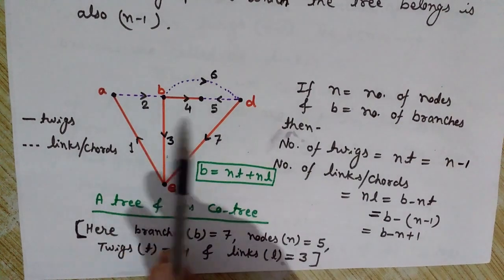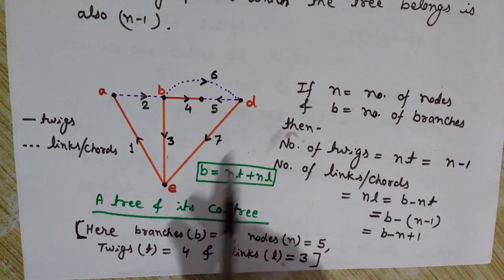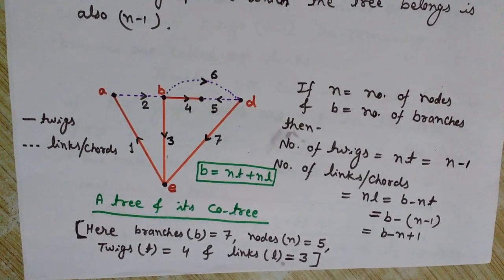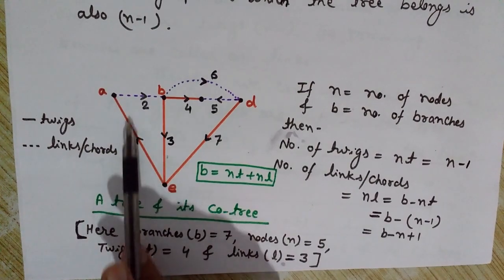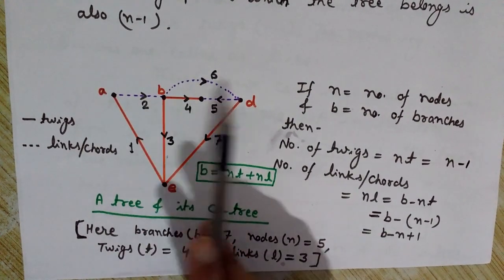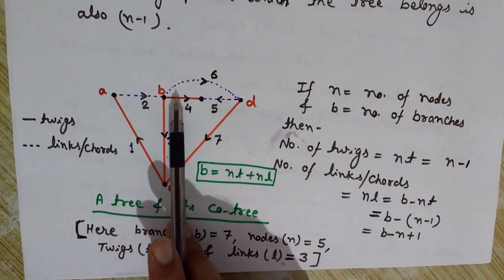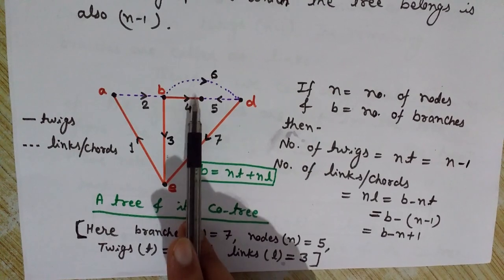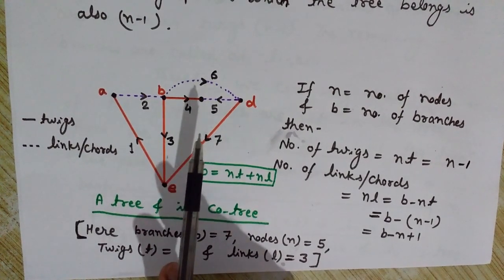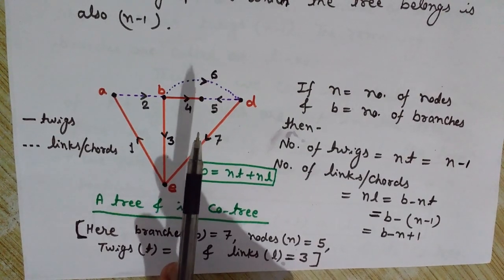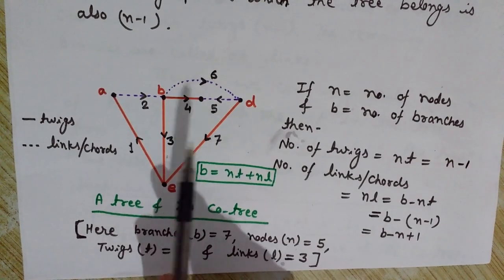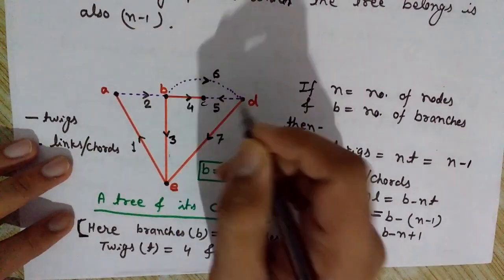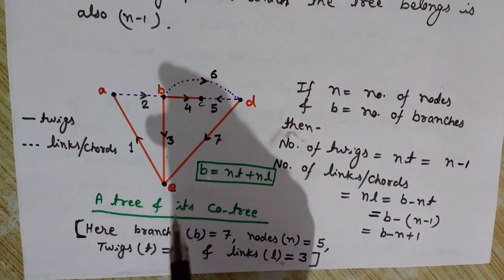This is one particular tree drawn from our example graph. The tree is a connected graph because it has a path from one node to another, and it has no closed path, unlike the original graph which had various closed loops. It also has a unique single path between every pair of nodes. This tree has five nodes: A, B, C, D, and E.